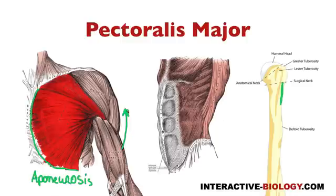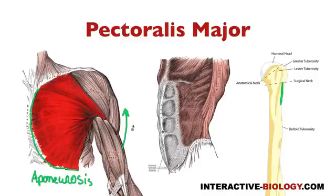Now, what's going to happen when the sternocostal portion contracts? One of the things it's going to do is extend the arm — so it's actually working opposite to the clavicular head. It's going to extend the arm, moving it back down. That's one of the actions.